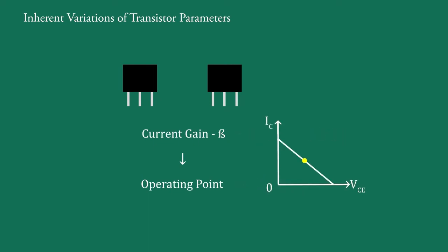Suppose the Q point is here for some value of β. Now, if β is somewhat higher than this, the Q point moves upwards. And if β is less than this, then the Q point moves downwards.